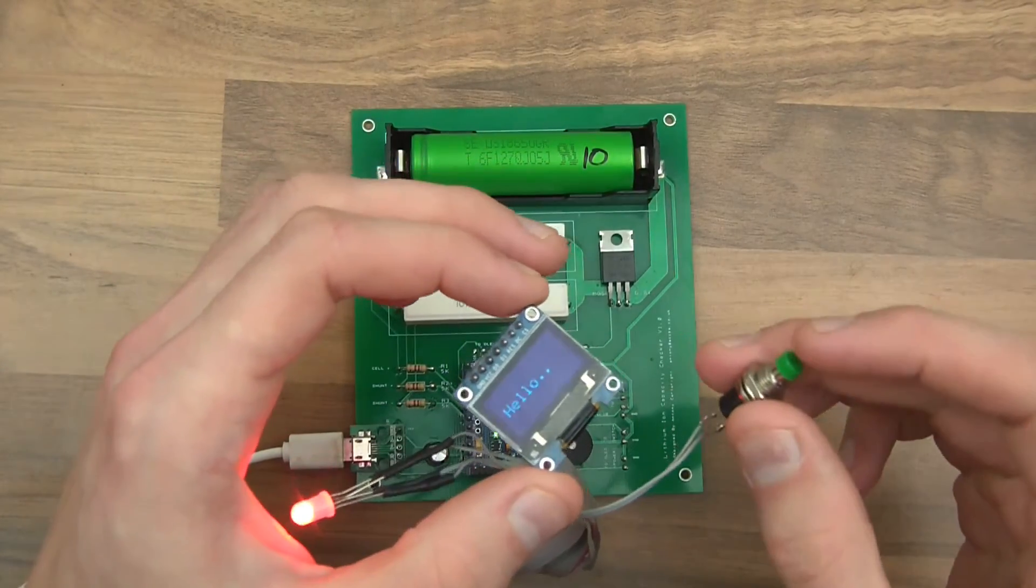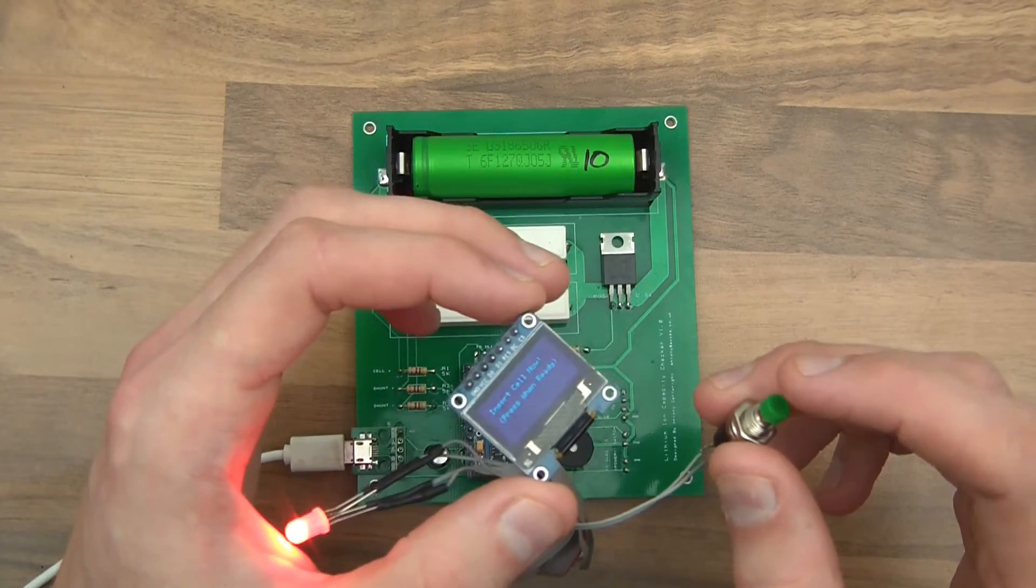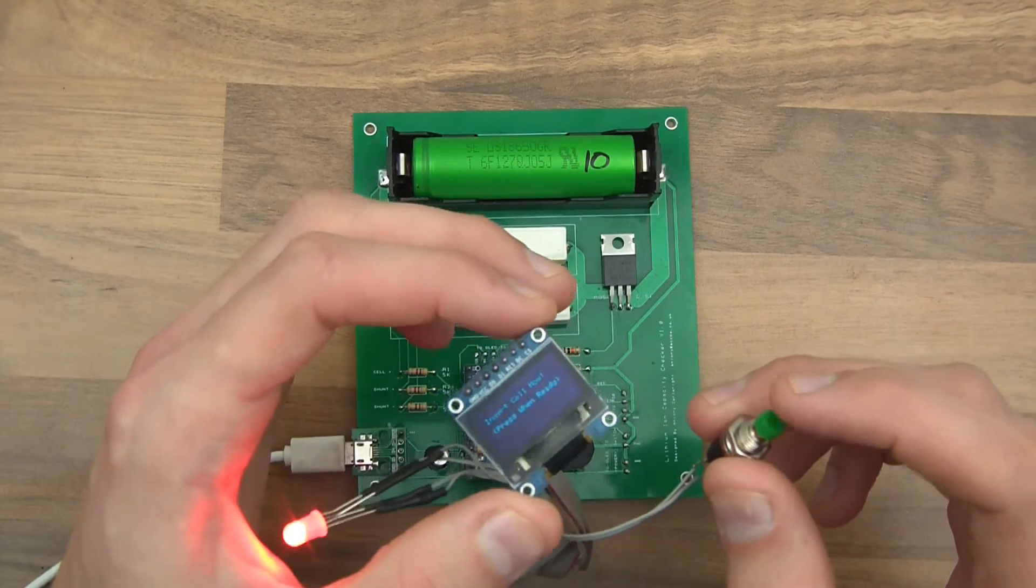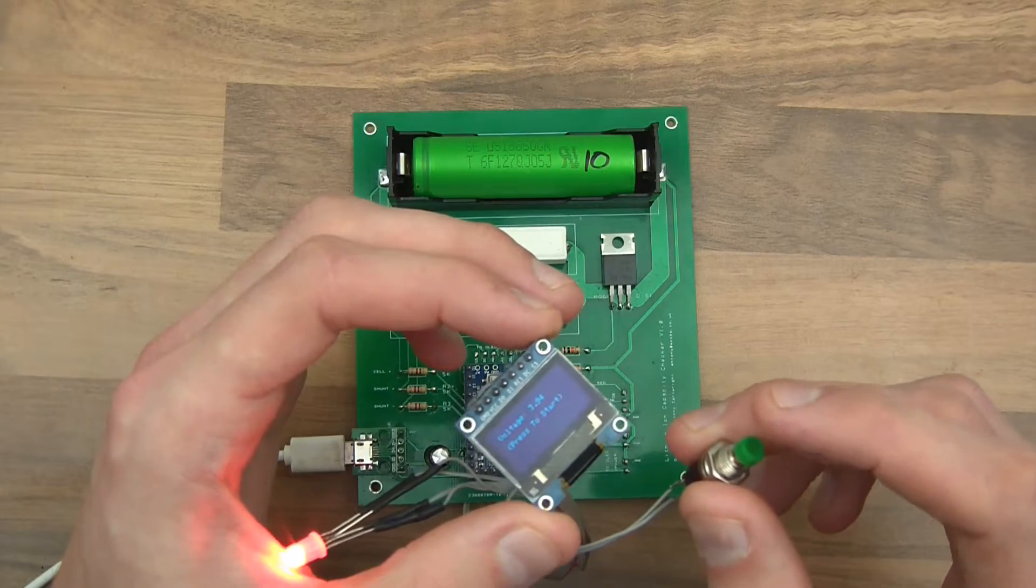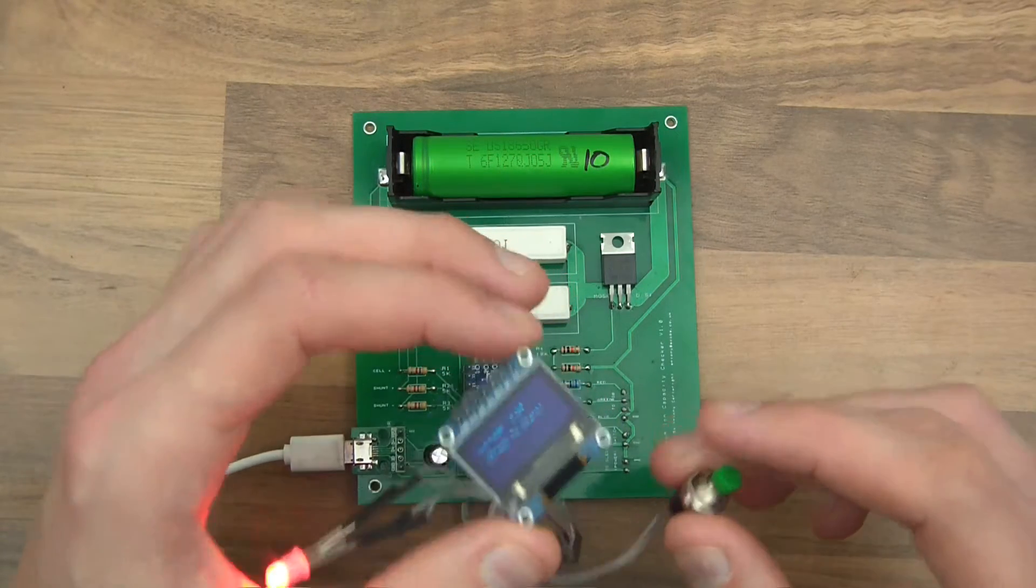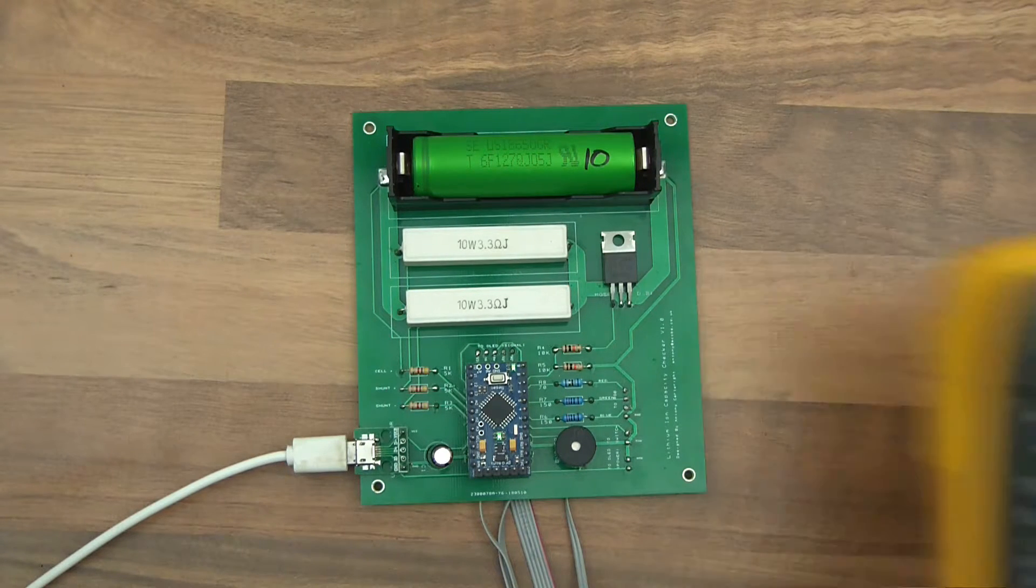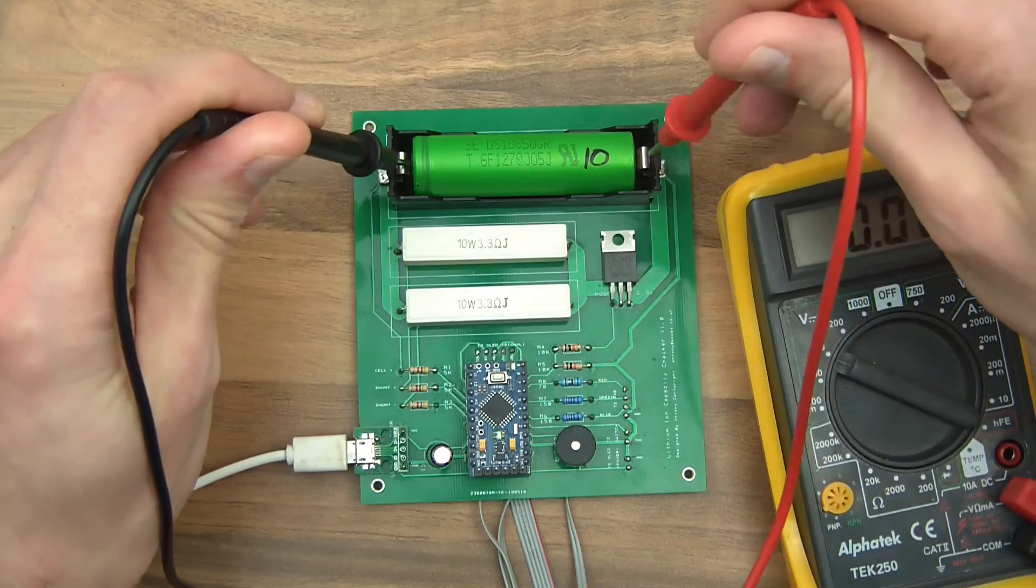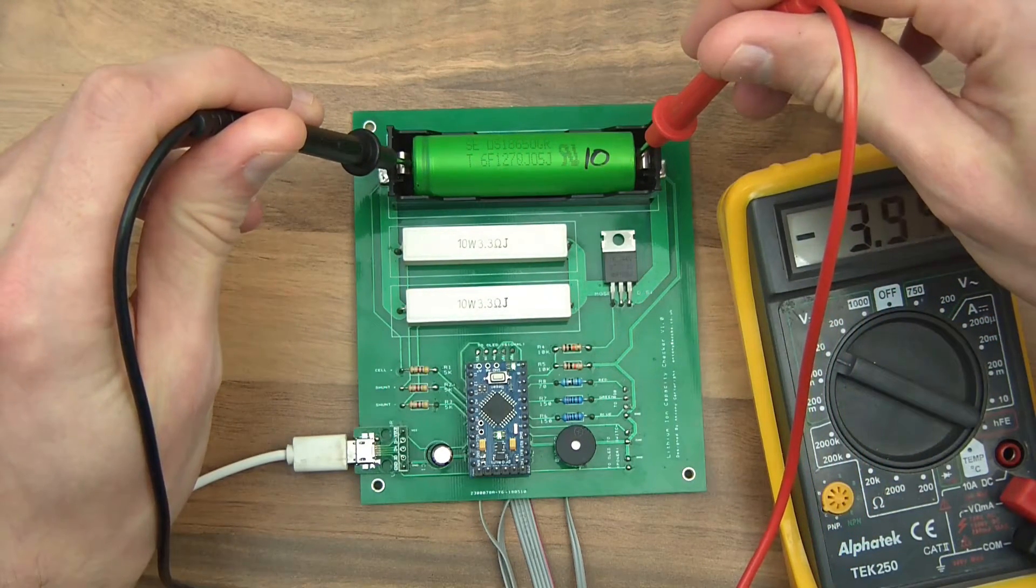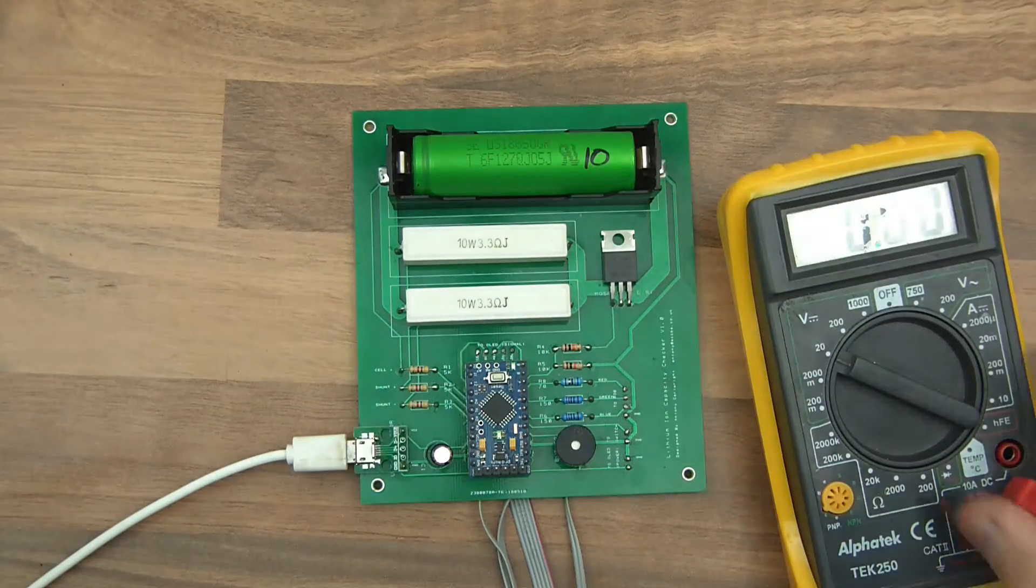So when you reset it says hello and then you've got an LED, which incidentally shouldn't be red at the moment but it's just a code issue. Insert cell now and press run ready and it says the voltage is 3.94 volts, so let me just check that. If it's not 3.94 then we've obviously got some sort of major problem. Let's see what we've got here. 3.934, that's perfect, so we're good there.